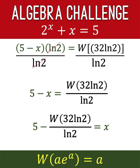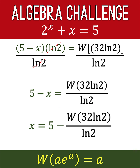This 5 is kept, the minus x becomes plus x on the right side, and the Lambert W expression moves to the left side as negative. Then by the symmetric property of equality, we interchange the left and right sides, and we have just solved for x. x is equal to 5 minus the Lambert W of 32 ln 2, all over ln 2.